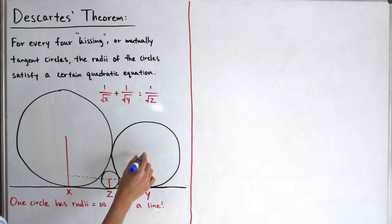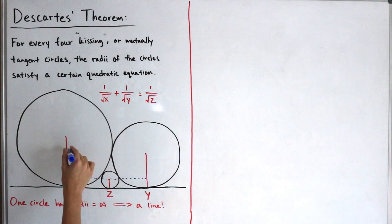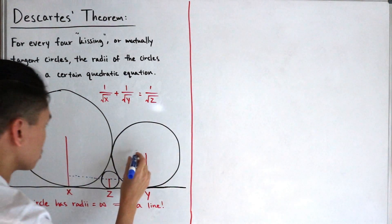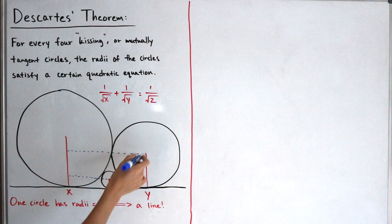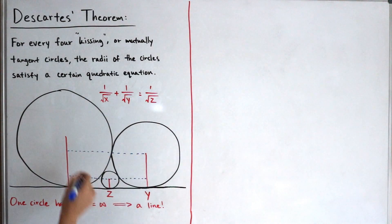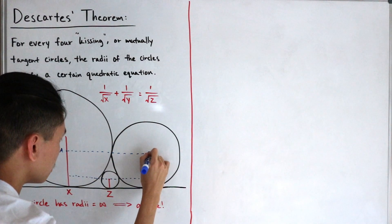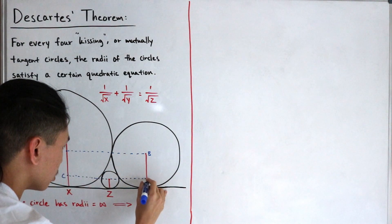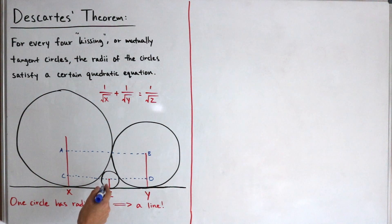And then we're going to connect the center of our radius Y and draw a line segment connecting all the way to the end of where the line segment of radius X is. I'll actually label these vertices at the connection of these line segments and the radii. So here I'll just call this A, call this B, we'll call this C, and then over here we'll call this D.